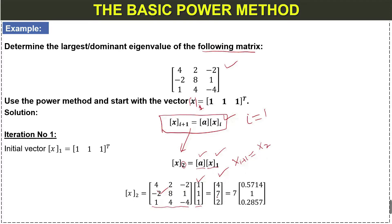Now we take the common factor: the largest element in this vector is identified, and we factor it out. We divide the other elements by this largest value, giving us a multiplicative scalar and a normalized vector where the largest entry is 1 and all other entries have absolute value less than 1.